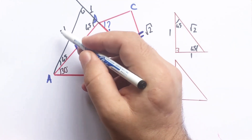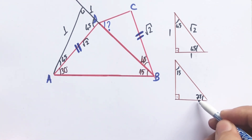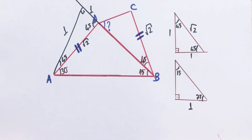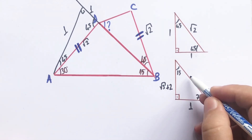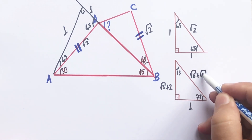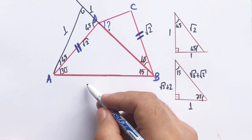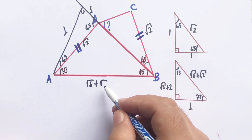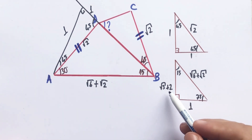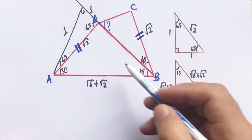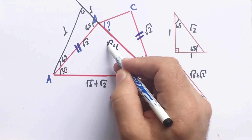If there is a one unit across the 15 degrees — let's remind you — if there is one unit across the 15 degrees, across the 75 degrees is root three plus two, and the hypotenuse must be root six plus root two. So across the 75 degrees, the hypotenuse is root six plus root two, meaning root three plus one is left here.